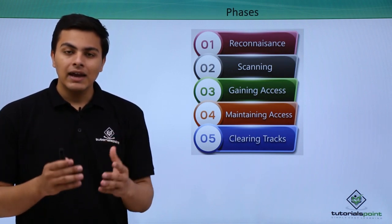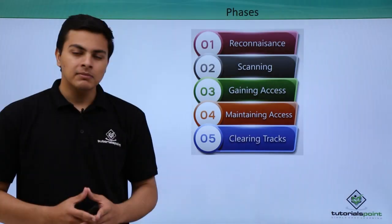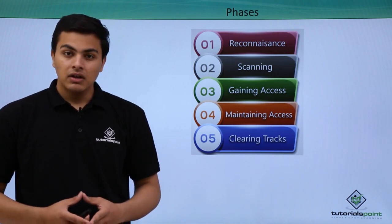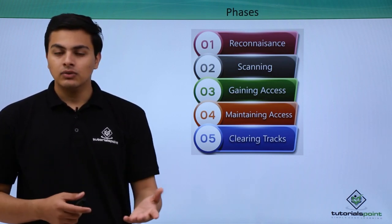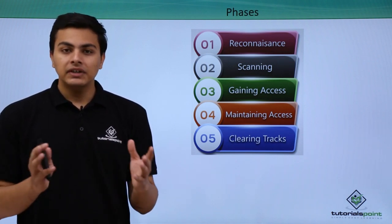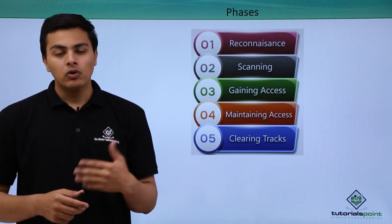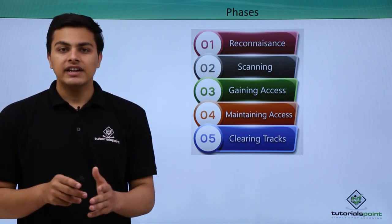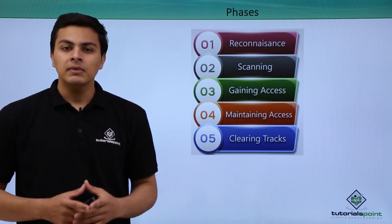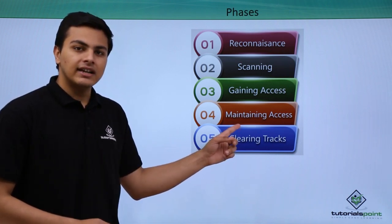Once we are inside the system and have successfully exploited it, the first thing to do is create a backdoor. For example, if we somehow lose access to that system and cannot get back in, we need a way to return. So in the maintaining access phase, we upload a shell or generate our own vulnerability in the system so that we can come back and regain access.